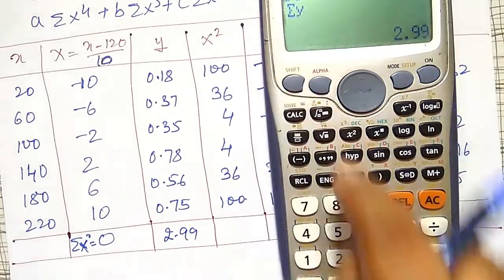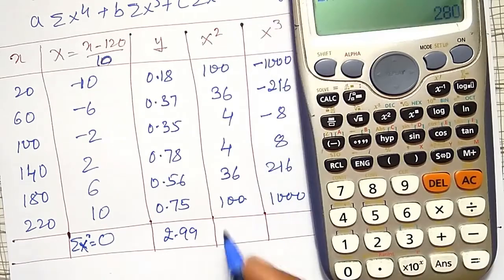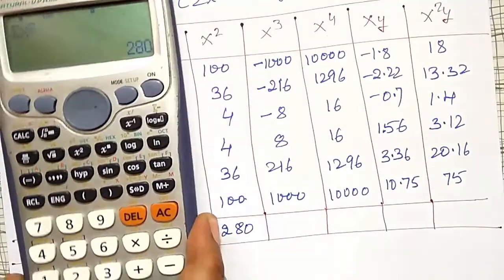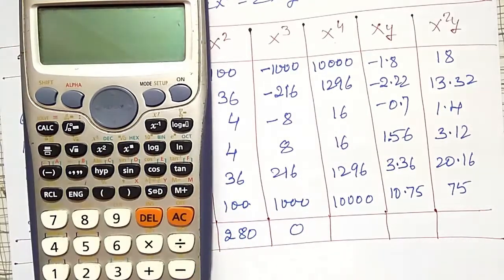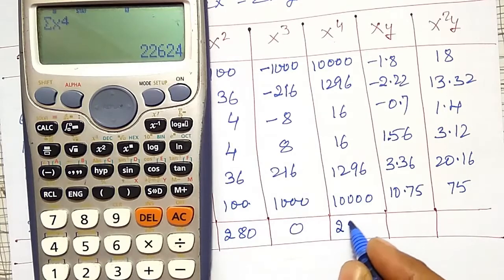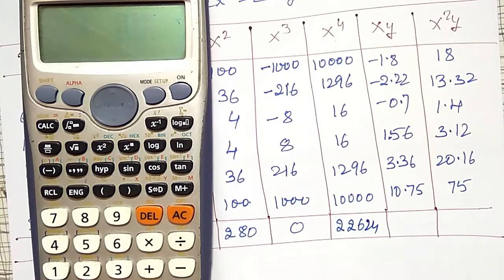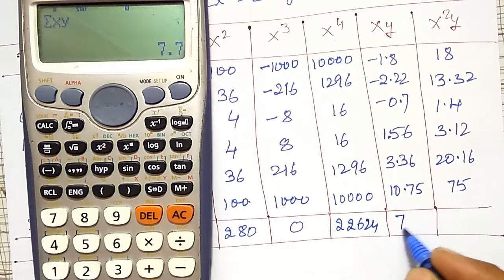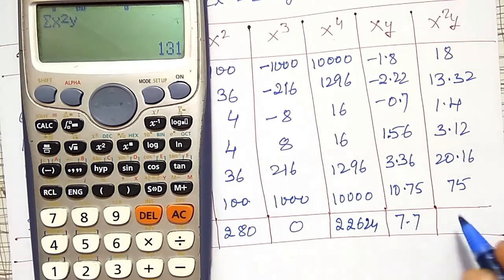Next, summation X²: shift 1, sum, X² option 1, which equals 280. Summation X³ also equals 0. Summation X⁴: shift 1, sum, X⁴ option 8, value = 22624. And ΣXY: shift 1, option 3, XY option 5, equals 7.7. Then ΣX²Y: shift 1, sum, X²Y option 7, equals 131.